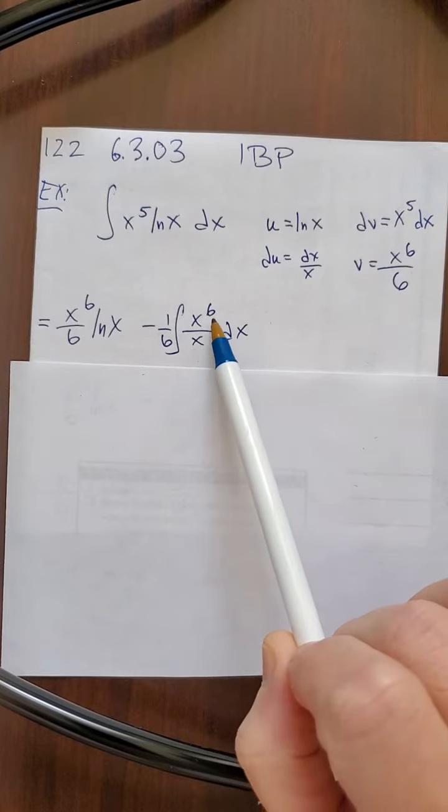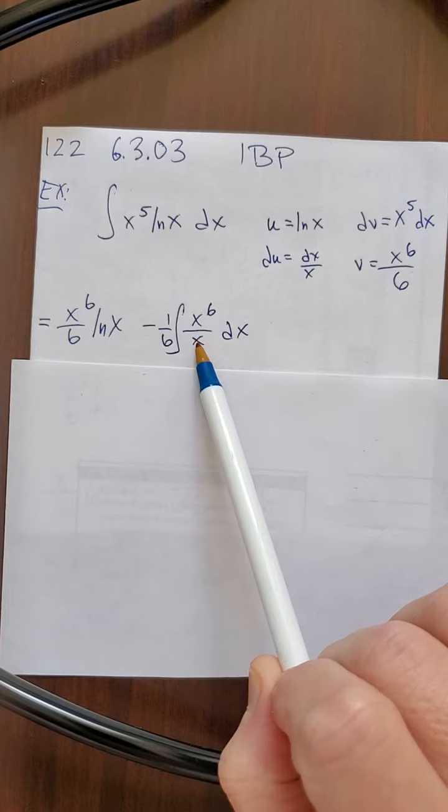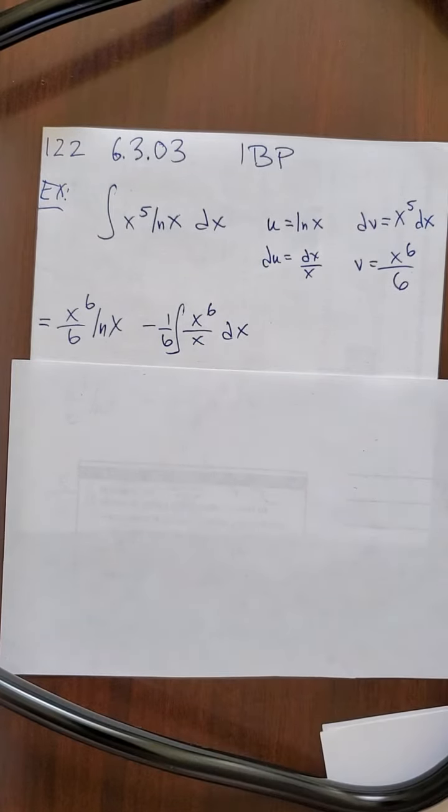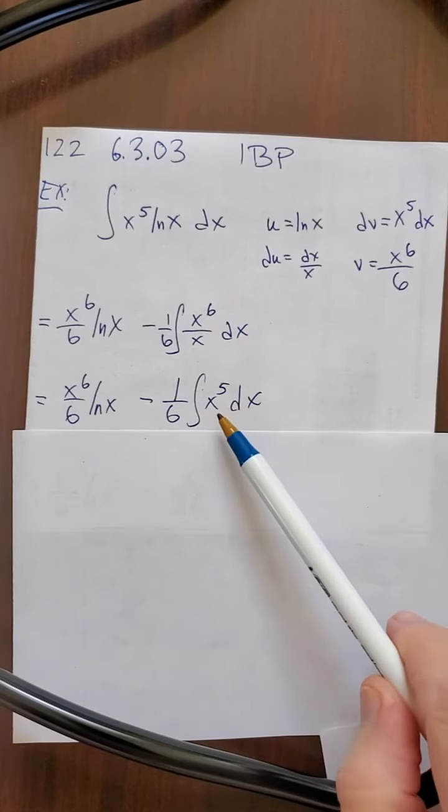So this becomes x to the 6th, and that x down there goes over here. So I have 1/6 times x to the 6th over x, and that simplifies to just x to the 5th, because x to the 6th divided by x is x to the 5th.